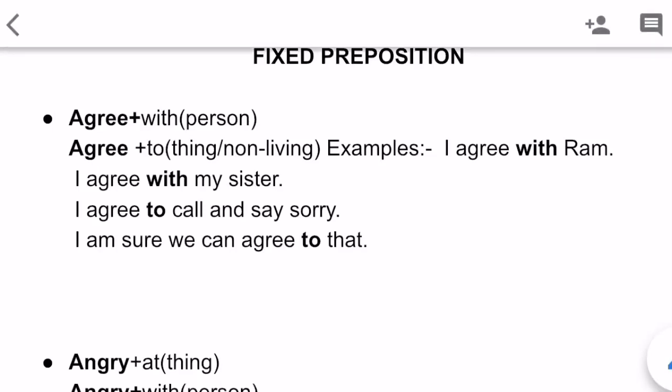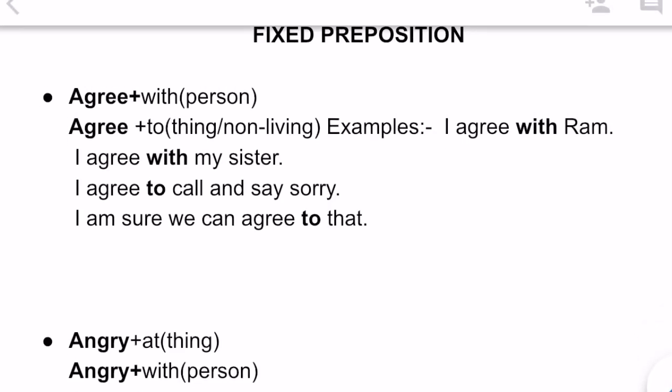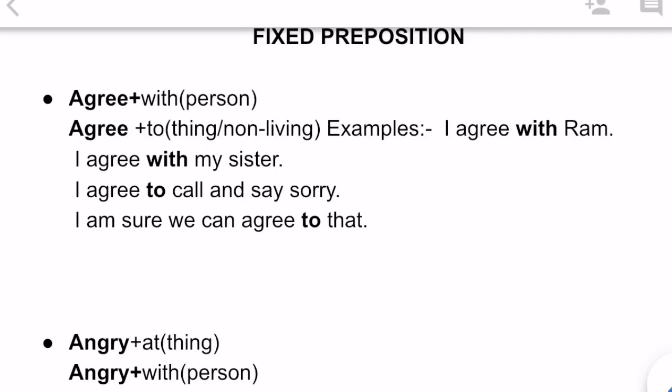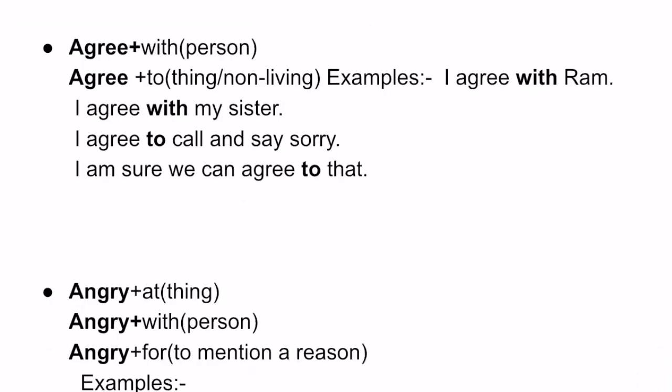We can use both prepositions 'with' as well as 'to,' but the conditions under which we use them change. We use 'agree with' whenever we are speaking about a person directly. We use 'agree to' whenever we are speaking about a non-living thing or situation. 'With' comes with a person; 'to' comes with a thing or a situation. It is as simple as that.